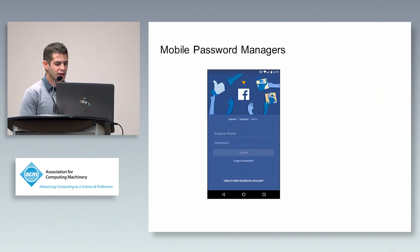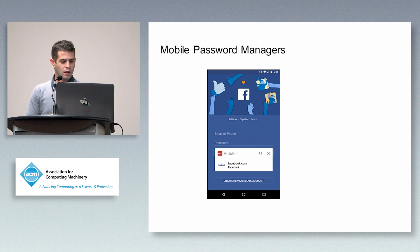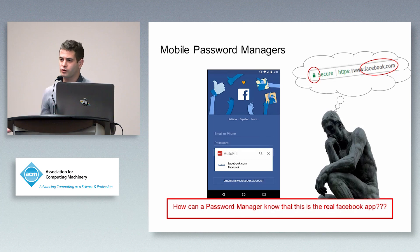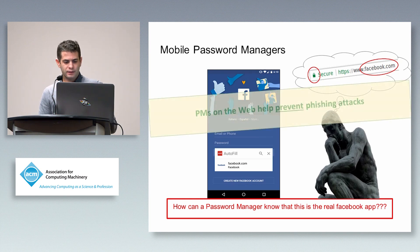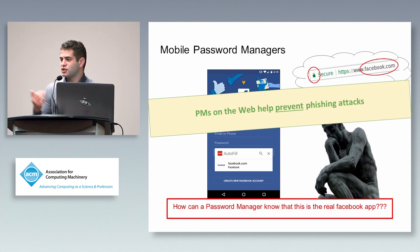As you can see in the image, here we have the Facebook Android app, and the autofill technology kicks in — a password manager, this is LastPass, is suggesting to the user the Facebook credentials. But how can a password manager know that this is the real Facebook app? Because here we are no more in the web world. We don't have a domain, we don't have certificates, and we don't have a certification authority. In the web world, password managers help prevent phishing attacks because they suggest credentials only if the user is in the right domain.